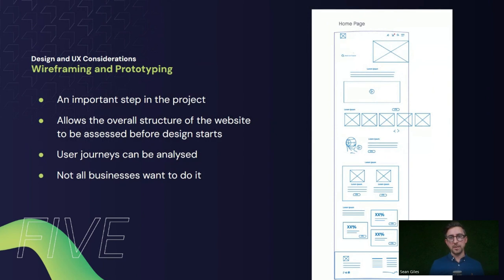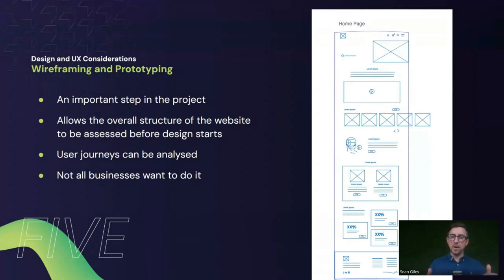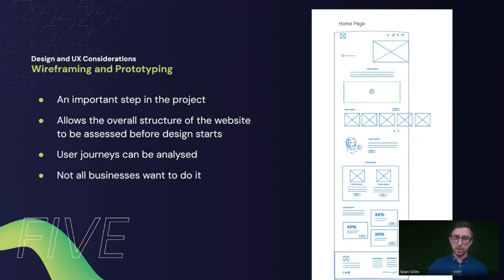Last but not least here is wireframing and prototyping. This is a really important step — we've got an example wireframe done last year. It basically allows the overall structure of the website to be assessed before design starts. This is pre-design — it's about understanding the pages you want and the types of content on those pages, then putting together a block wireframe structure to show how the content will be laid out. You can quickly and easily change things around and work on the content flow.